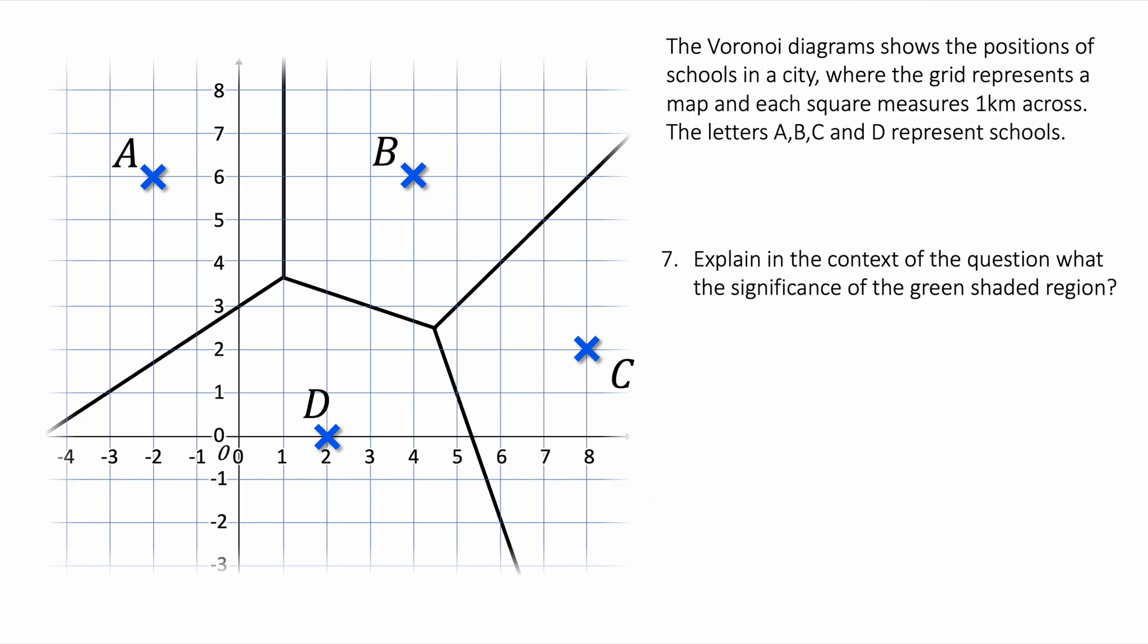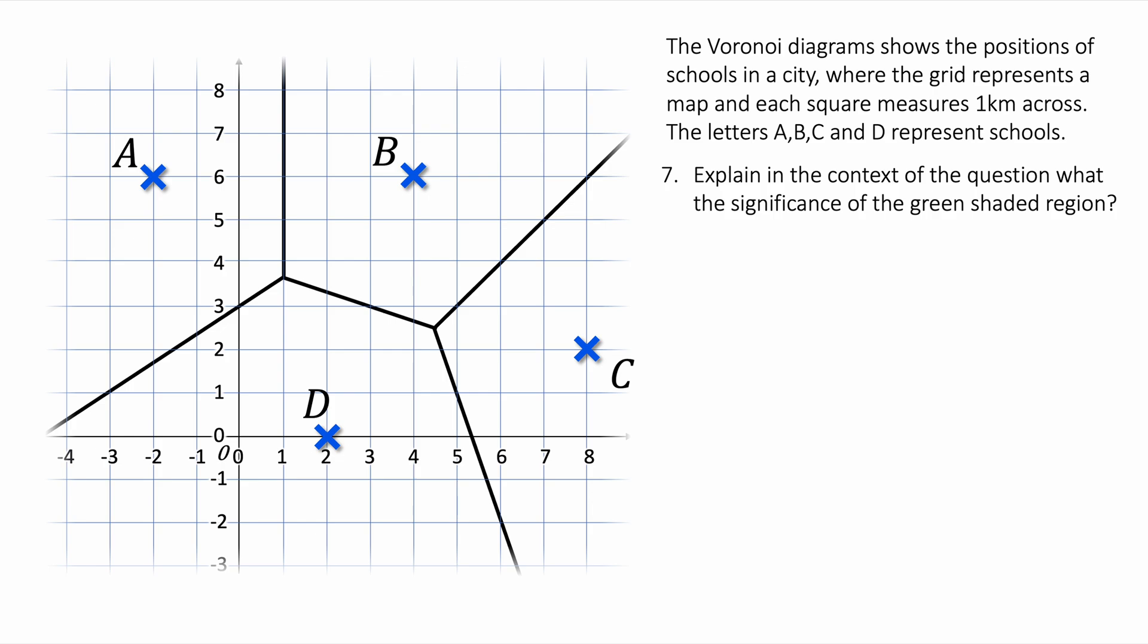Finally, let's look at question seven. Explain in the context of the question what is the significance of the green shaded region. Here we've got a green shaded region around B. What I would say here is that the green shaded region is a set of all coordinates that are closer to school B than any other school. The key idea is it's closer to B than any other school, and I've used the context of the question about schools.